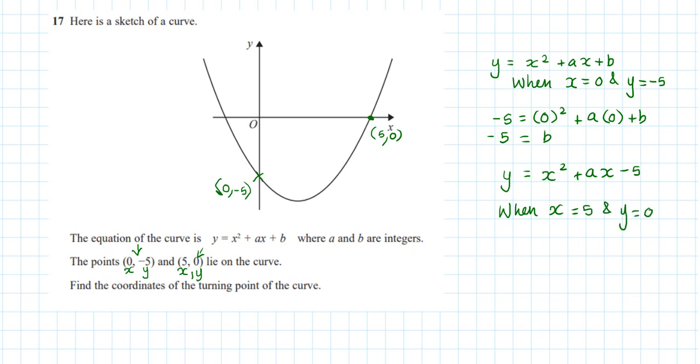We've got 0 equals 5 squared plus a times 5 minus 5. 5 squared is 25 plus 5a minus 5, and since 25 and -5 are like terms, I can simplify that to give me 20. So I've got 20 plus 5a.